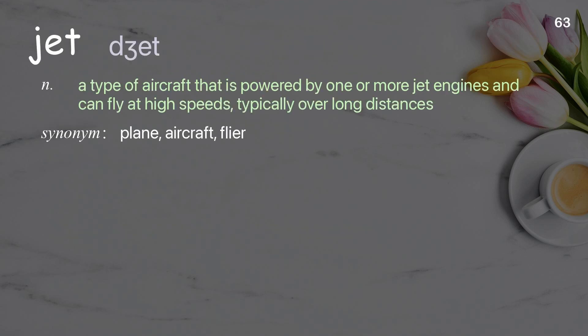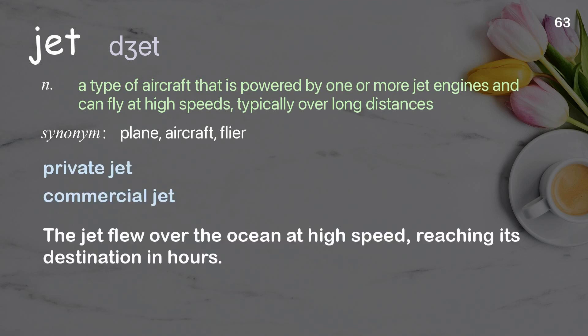Jet: a type of aircraft that is powered by one or more jet engines and can fly at high speeds, typically over long distances. Examples: jet flight. The jet flew over the ocean at high speed, reaching its destination in hours.